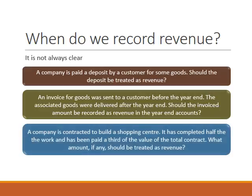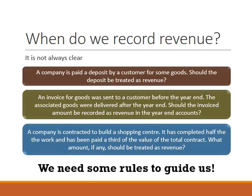But how about our third scenario? A company has been contracted to build a shopping centre. It's done half of the work and has been paid a third of the value of the total contract by its customer. So what amount, if any, should be treated as revenue? Hopefully you can see that that's quite tricky — it's not entirely clear how much revenue we should record. We need some rules to help guide us, and this is what IAS 18 provides.